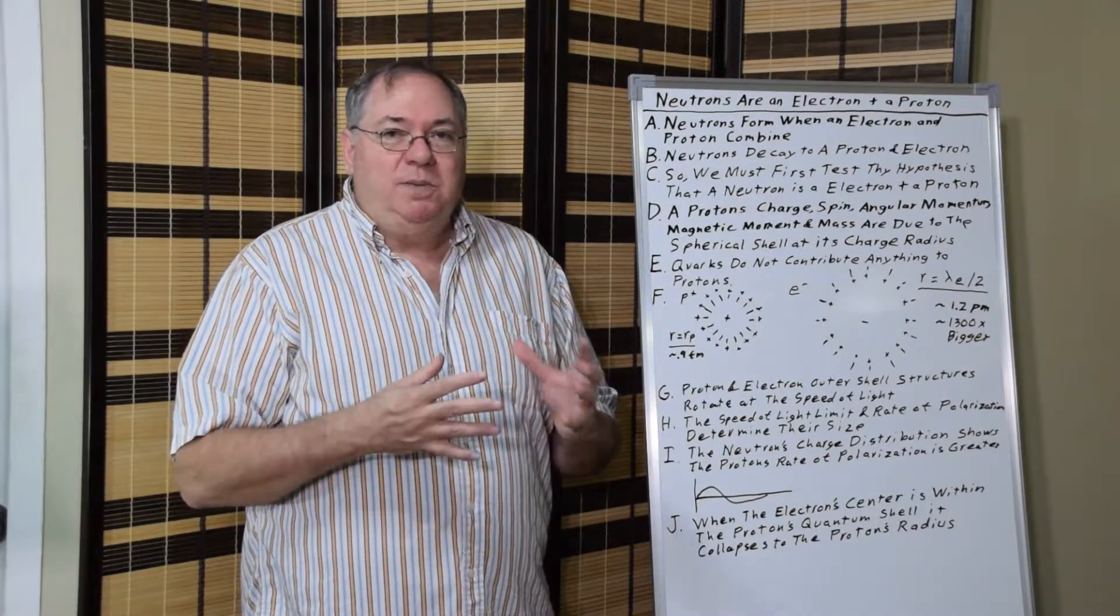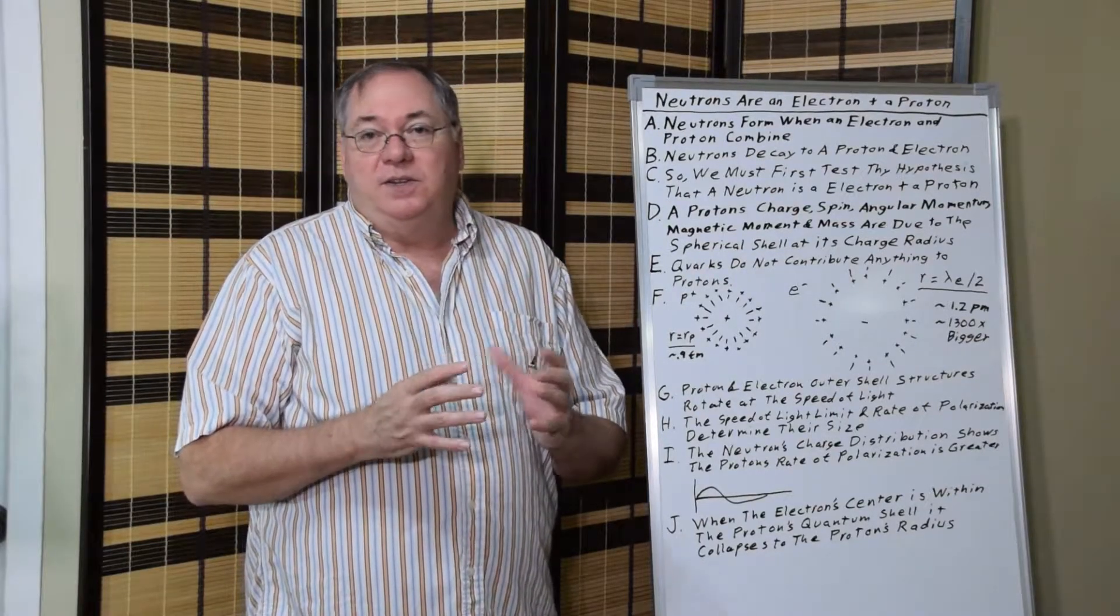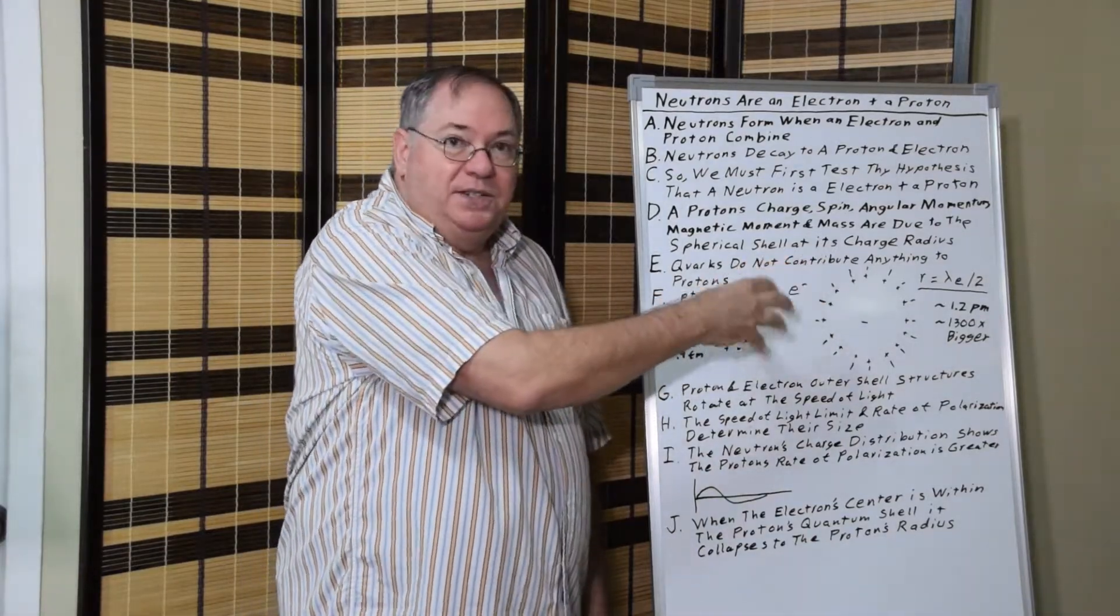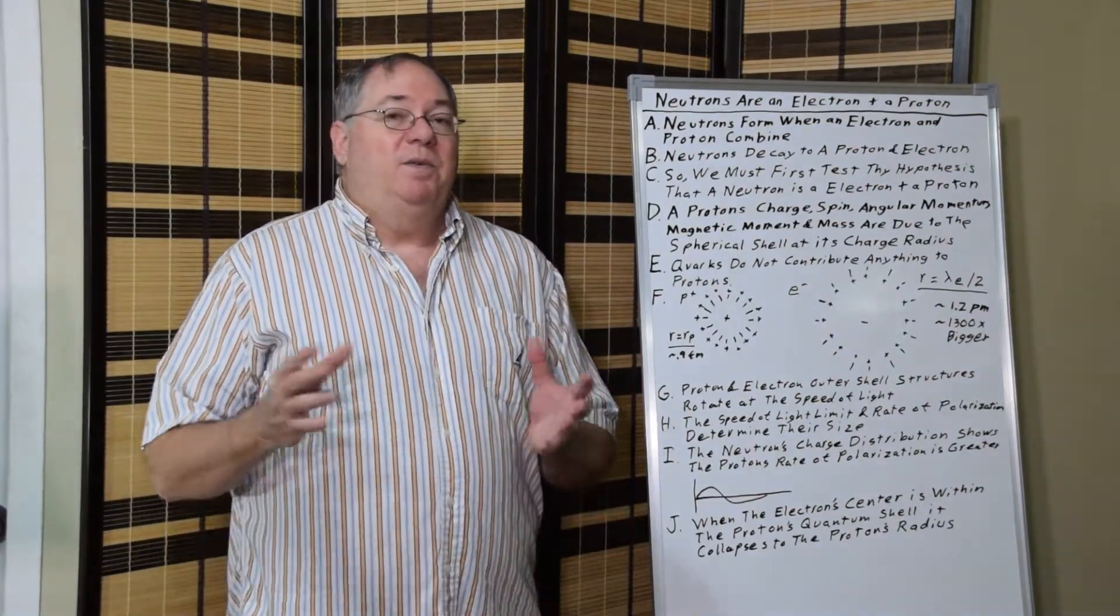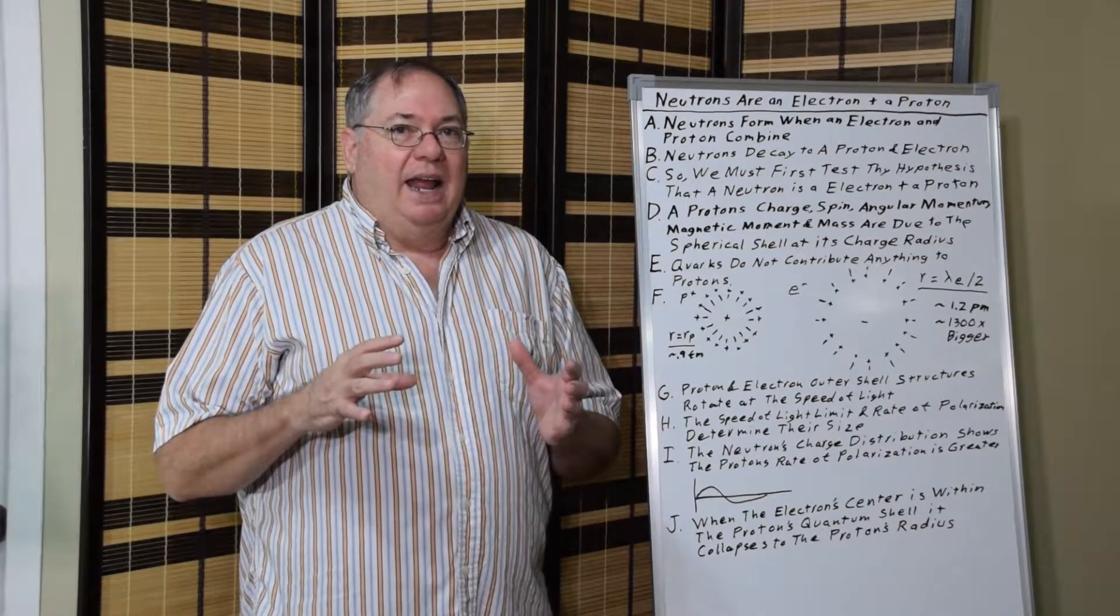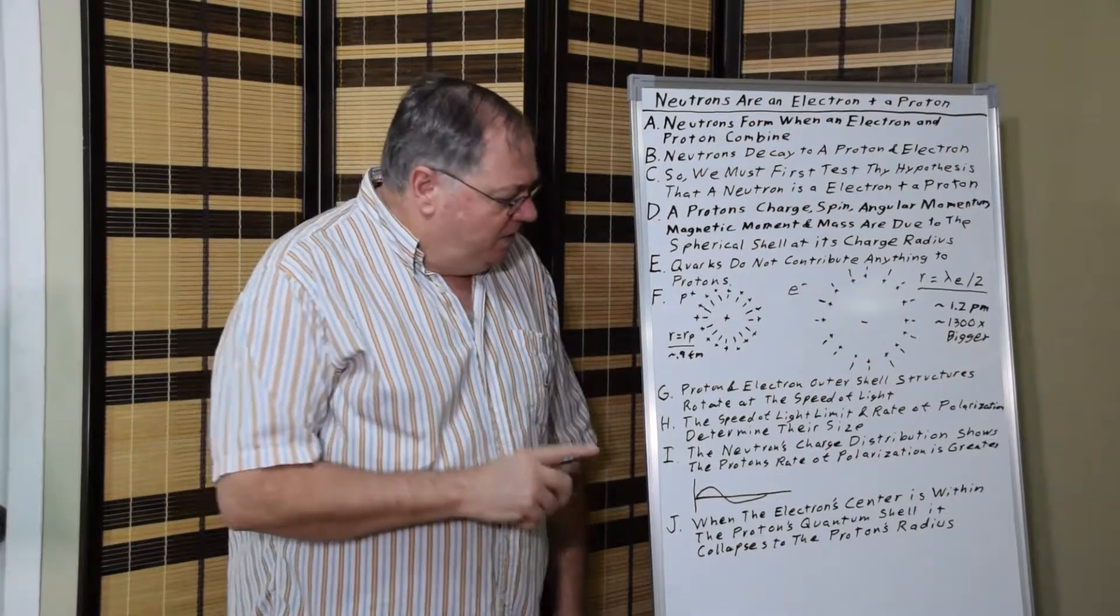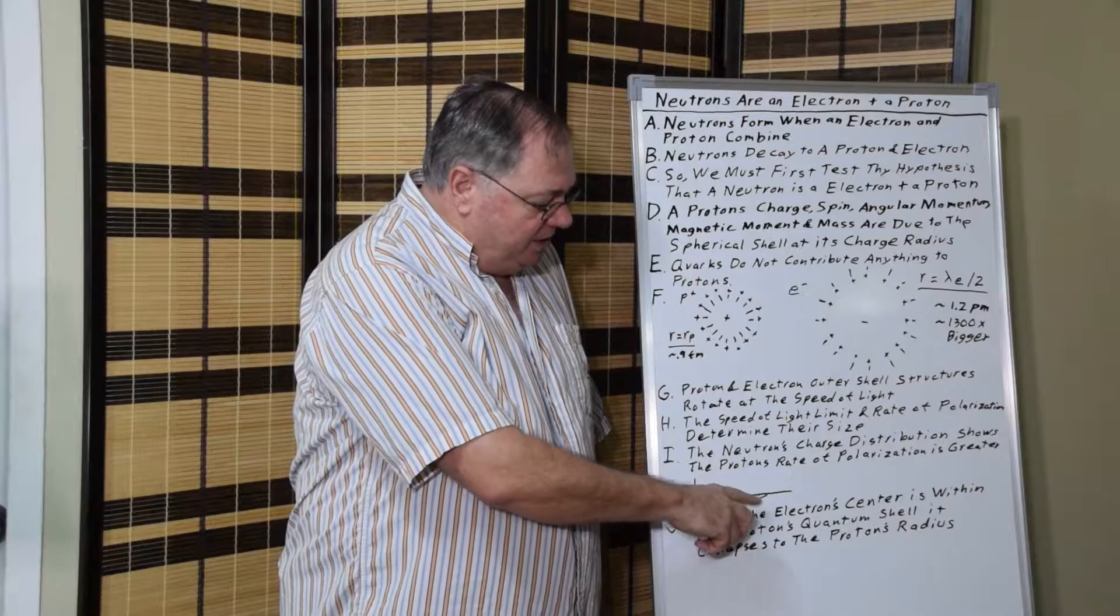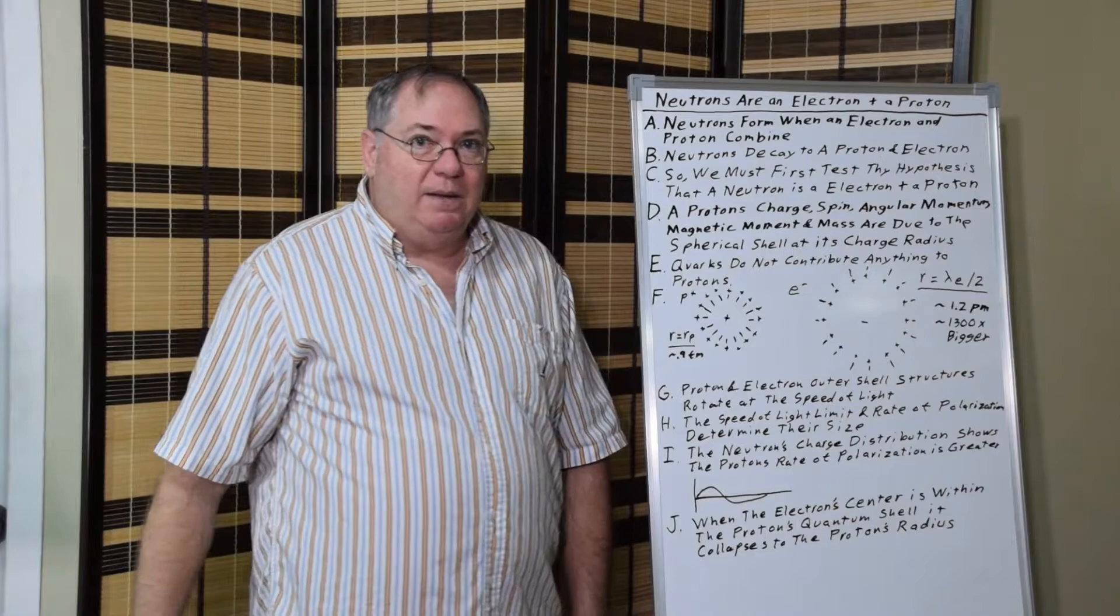So we ultimately end up with an electron that's been reduced in size to the size of the proton. So you simultaneously have these two structures superimposed with each other. Now I haven't worked out the details of what that looks like and how we end up with the magnetic moment we do. But we do know from experiments that we get a charge distribution that goes positive at first and then goes negative and then goes back up to neutral.